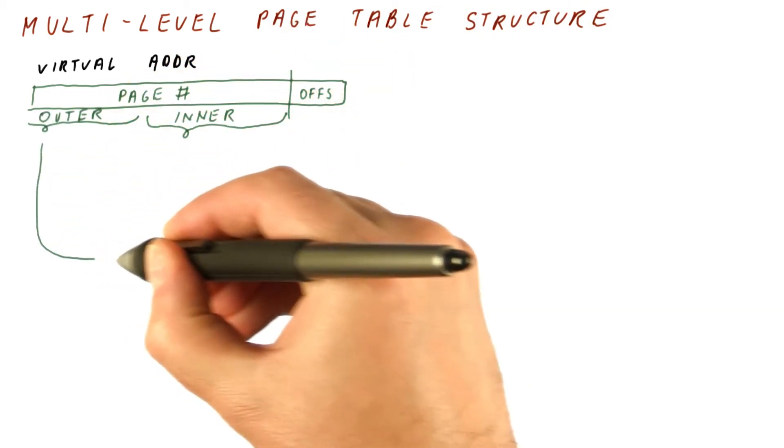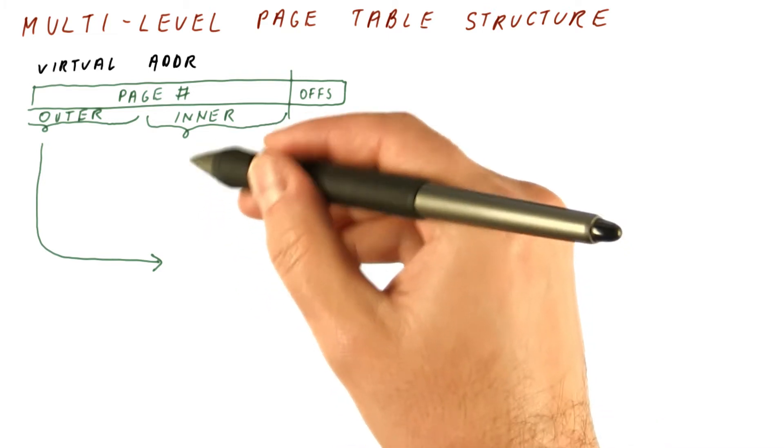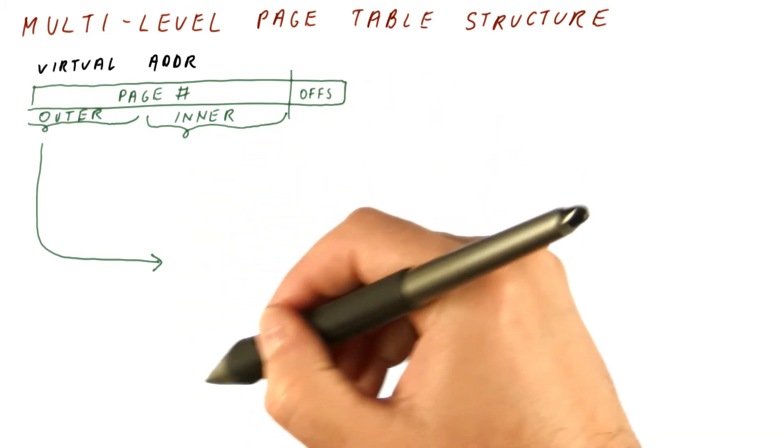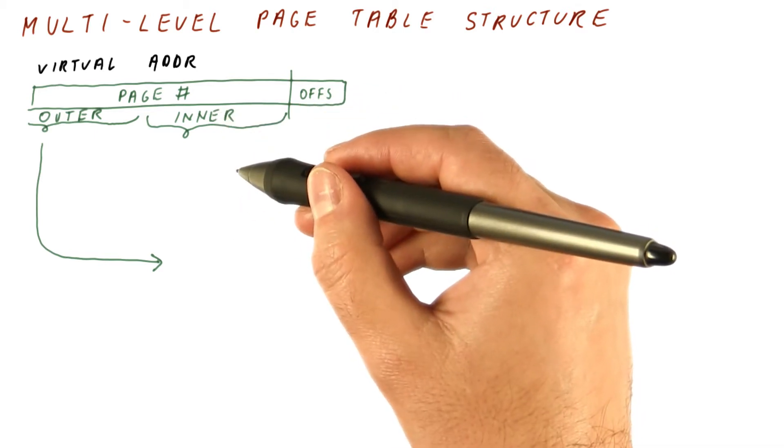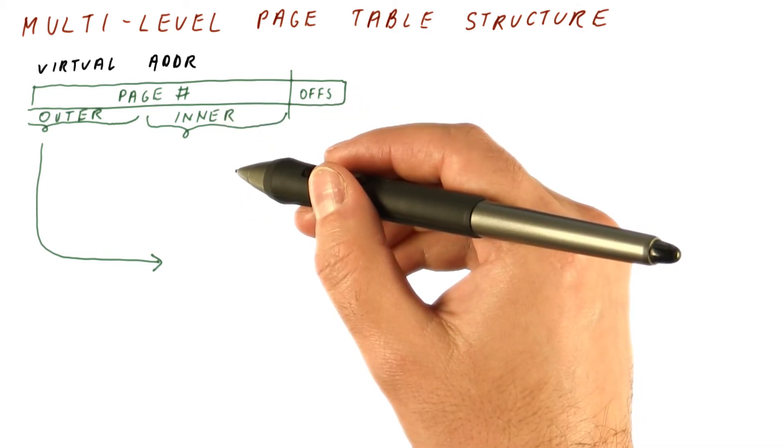The outer page number tells us which part of the large page table we would be using. The inner part tells us which specific entry in that large page table we would be using.